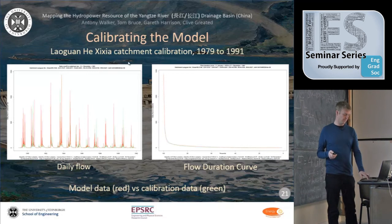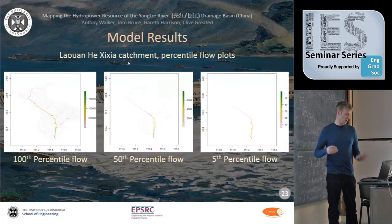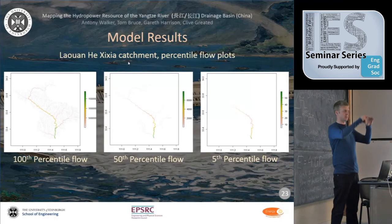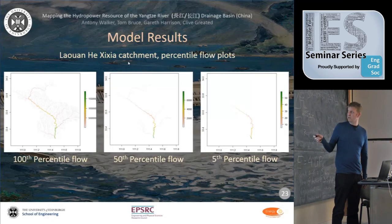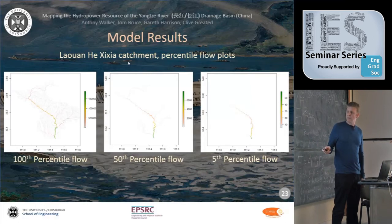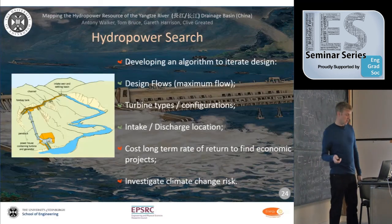Using the long time series we generate raster maps — grids of cells. One represents the 100th percentile flow, showing up to 1,500 meters cubed per second at Laoguanhe, which is huge. At low flows you get literally about 50 liters per second at the catchment outlet, with the big rivers visible down the center. These maps feed directly into the hydropower search.